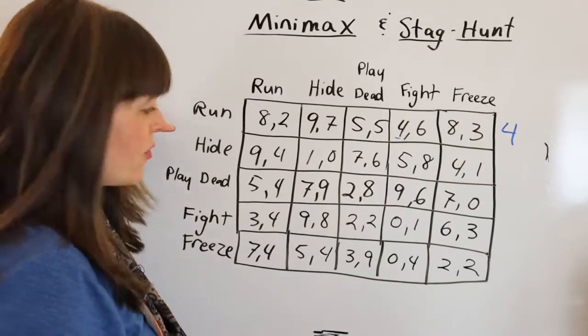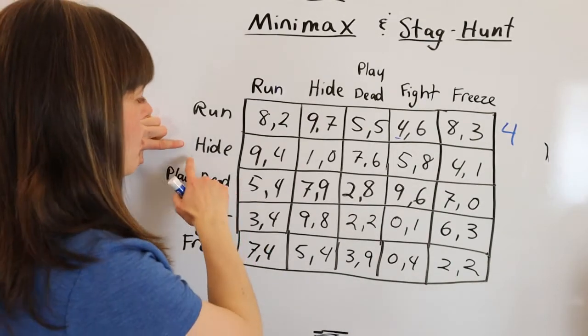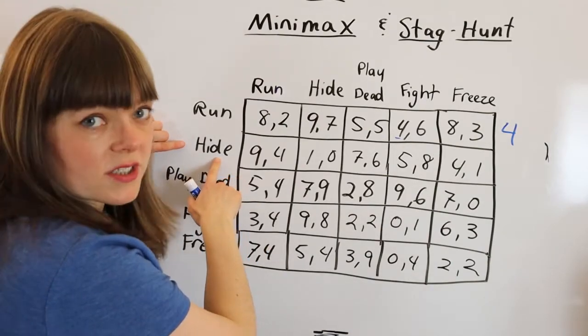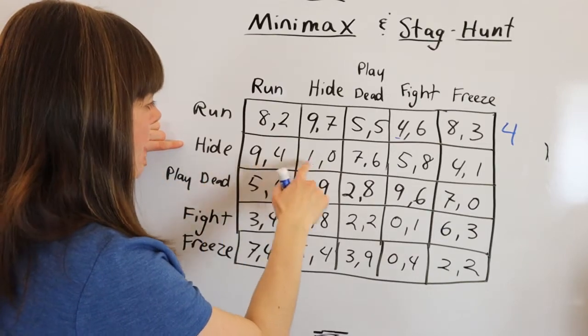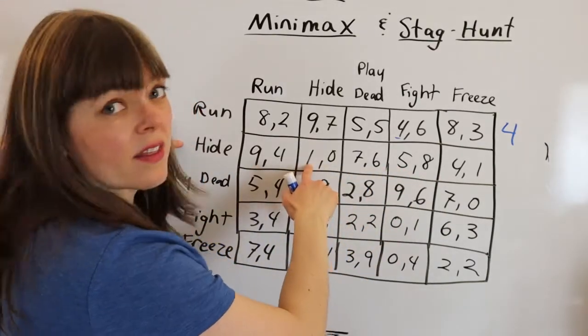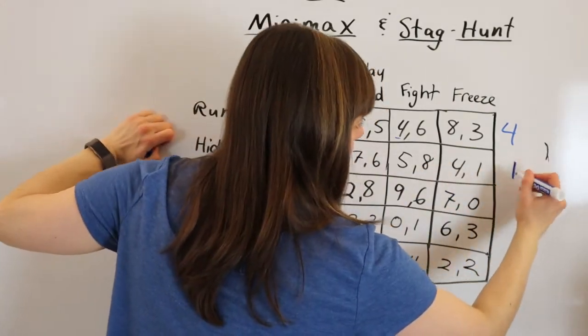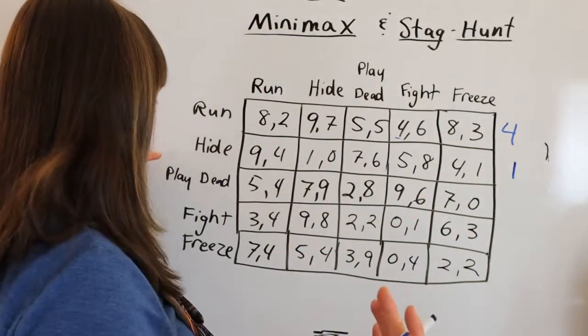And then they go through the rest of their options in the same way if I hide what is the worst thing that could happen. And it looks like the worst is going to be the 1, that I only get 1. Same with the rest of the strategies.